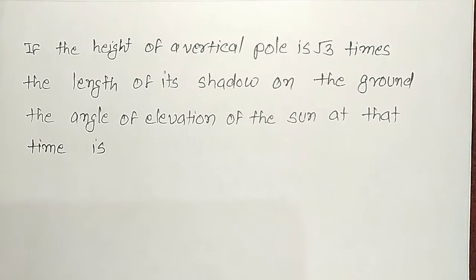if the height of a vertical pole is root 3 times the length of its shadow on the ground, the angle of elevation of the sun at that time is?